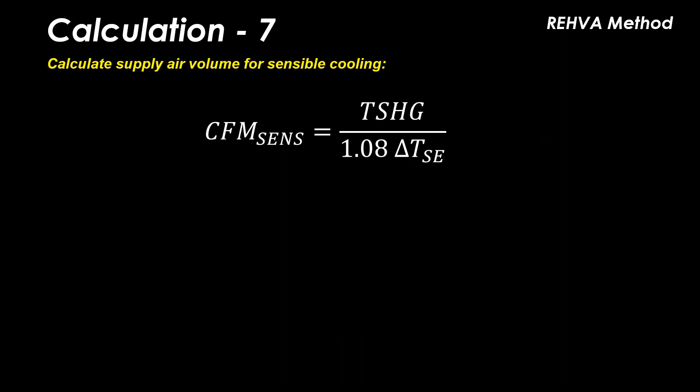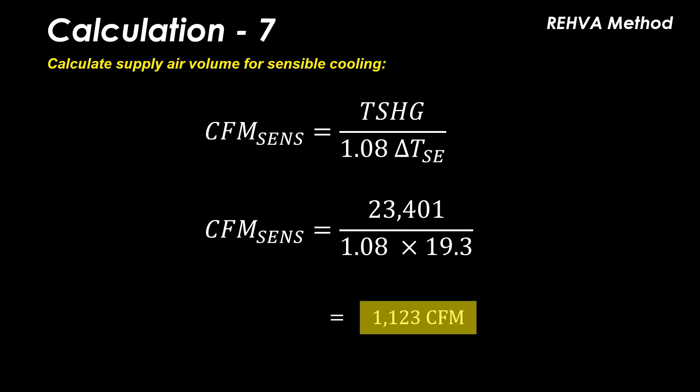The supply air volume to the space CFM sense can now be calculated by dividing the total sensible heat gains by 1.08 multiplied by the supply exhaust delta T, which results in 1,123 CFM.